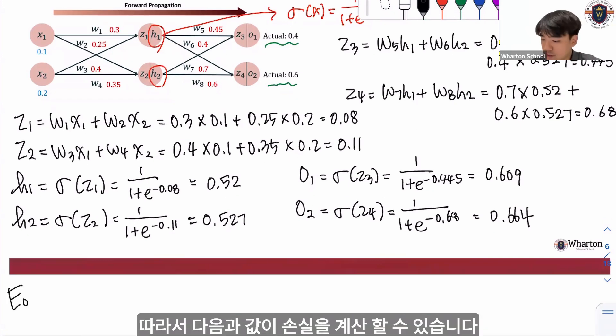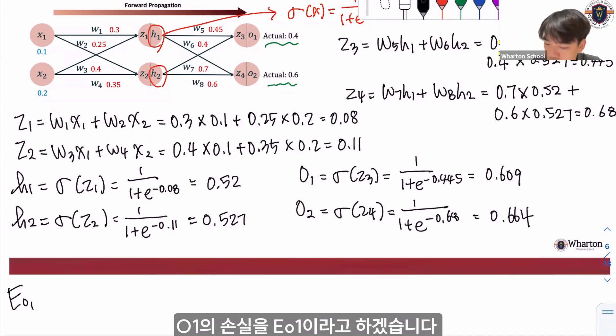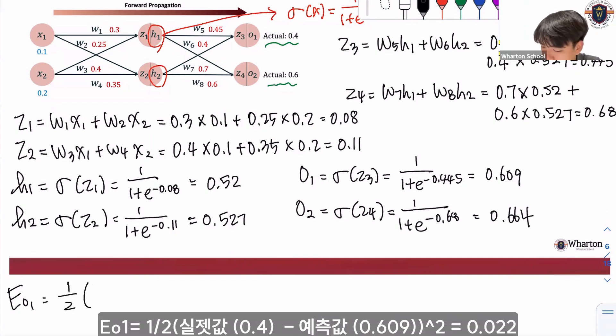Let me denote it as error of o1. 1 over 2 of the target, which is the actual value 0.4 minus 0.609 squared, which gives us 0.022.